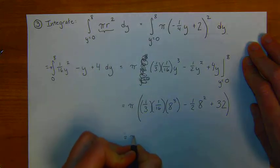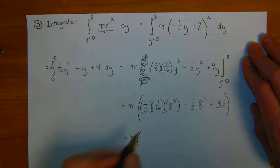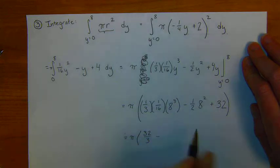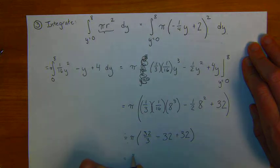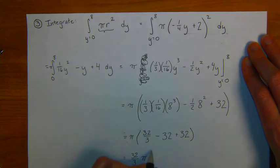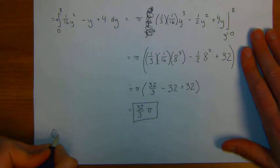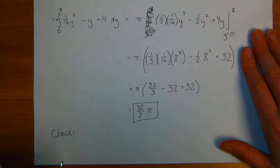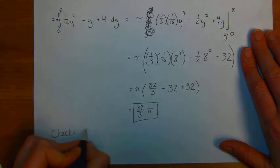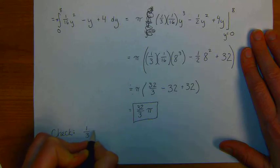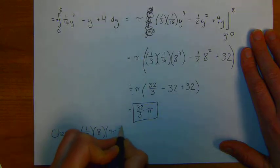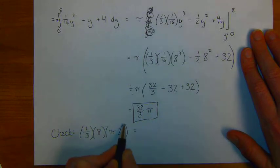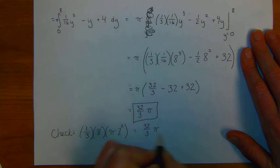Plugging this into our calculator, we get pi times 1/3 times 1/16 times 8 cubed is 32/3 minus 32 plus 32, and that gives me 32/3 pi as my final solution. And notice that I can check this. From basic geometry facts, we know that the formula for the volume of a cone is going to be 1/3 of the base times the height. Or in this case, 1/3 of the height, which is 8, and the base is pi r squared, which is 8 times 4, which is 32/3 pi, which checks.